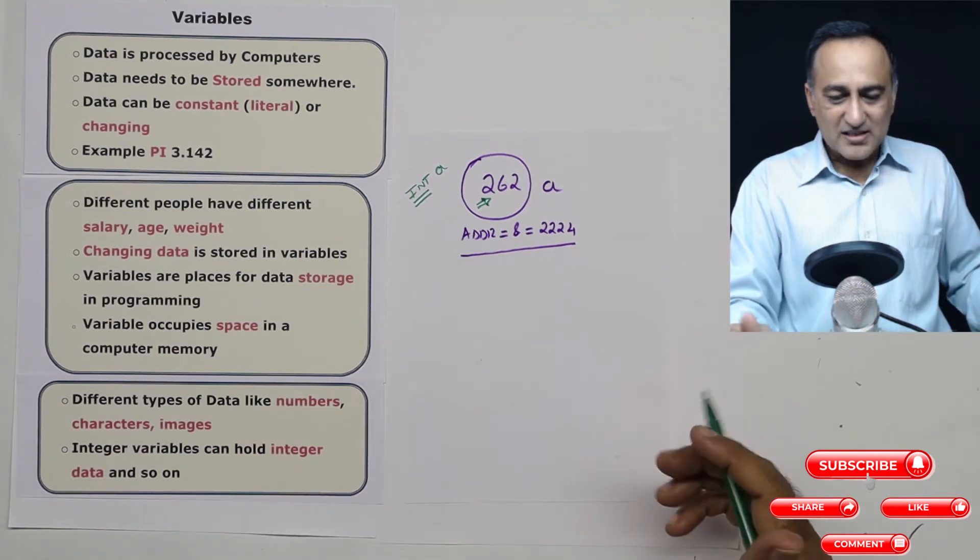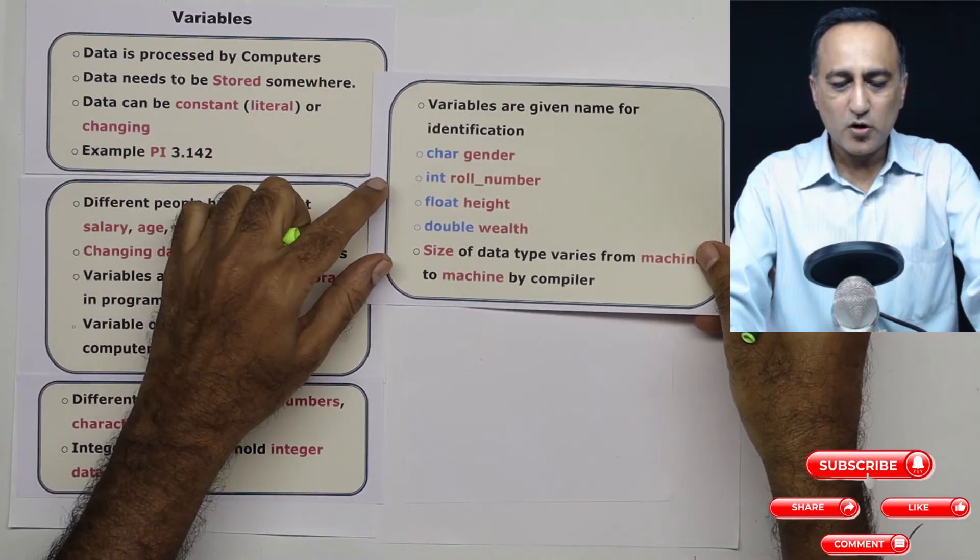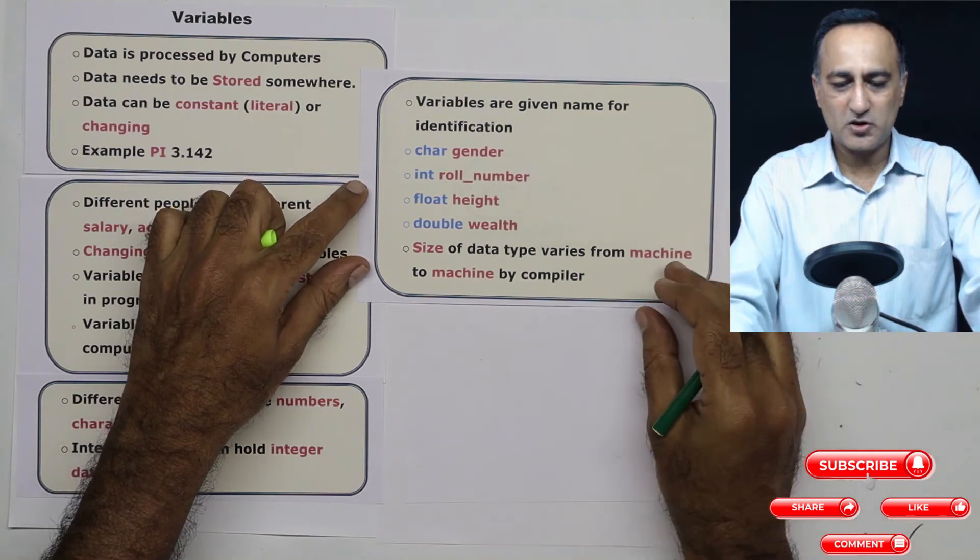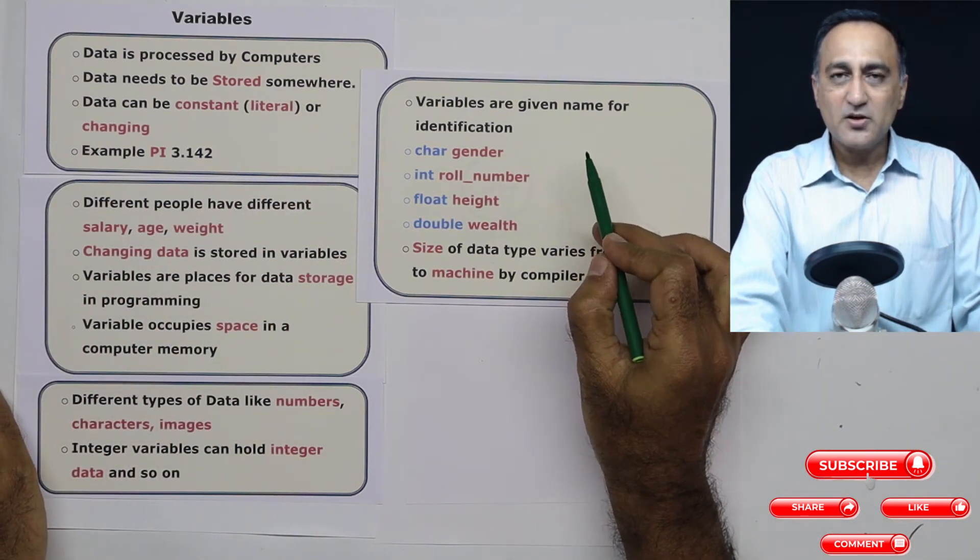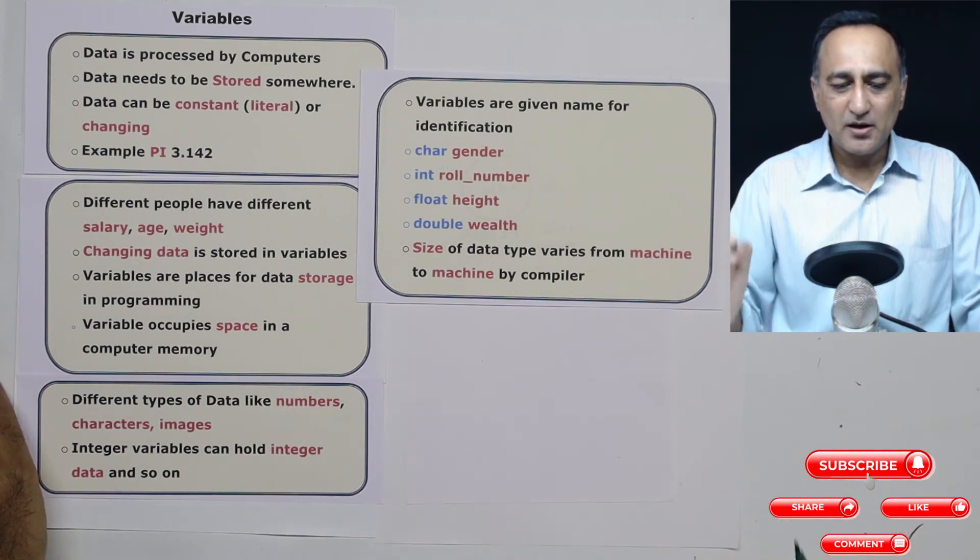Now, the reason we give names to memory location is because we want to have certain identification of that memory location. Similarly, variables are given names so as to identify the type and memory location.